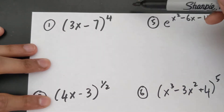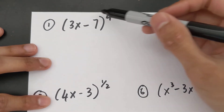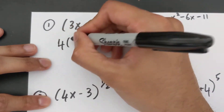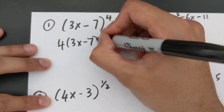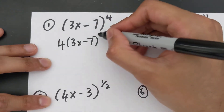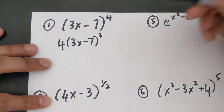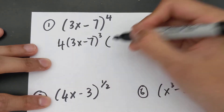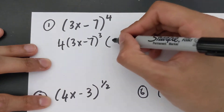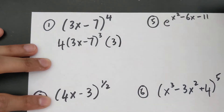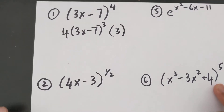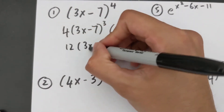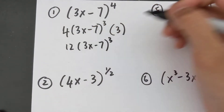In this case you have to derive normally: bring the four down, the inside stays exactly the same, subtract one from the exponent, and then multiply by the derivative of the inside. If I derive the inside I just get three, so three times four is twelve — giving 12(3x − 7)³.